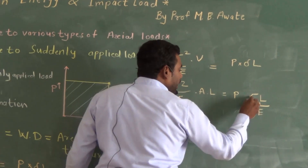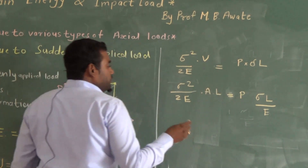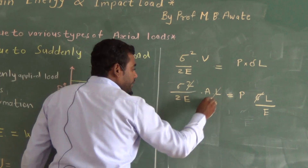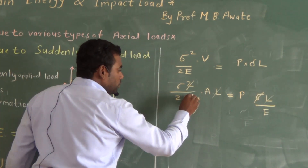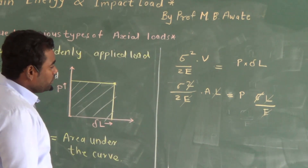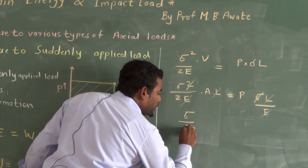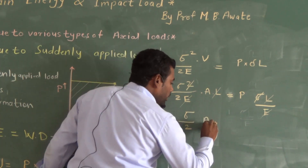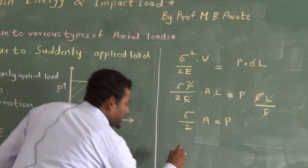Now, P divided by A can be taken as sigma. Looking at which terms can be cancelled — sigma, sigma, sigma on both sides, and E, E cancel out. On the left-hand side it becomes sigma squared upon 2, times E times A, and rearranging the terms we get the result.